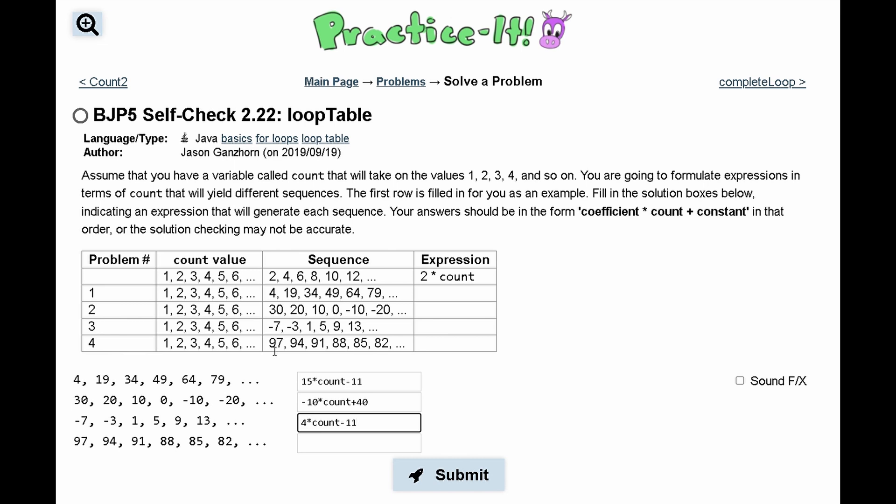What we are really doing here is kind of taking slopes. So what we are really saying is we have this value, 97 minus 94, over the count value, which would be 1 minus 2. So that will give us a negative 3. And this will continue being the same for here. So we have a negative 3 times count. And we can see that 1 times negative 3 is not going to give us a sequence, so we have negative 3 times count plus 100 to give us the full sequence.